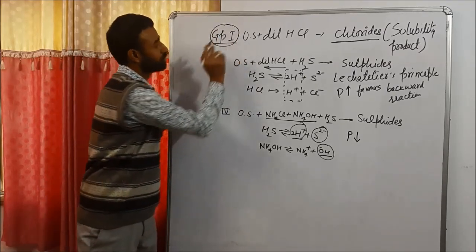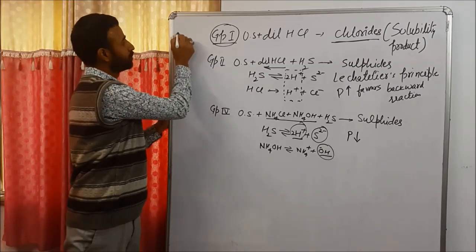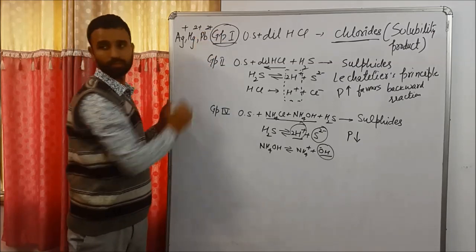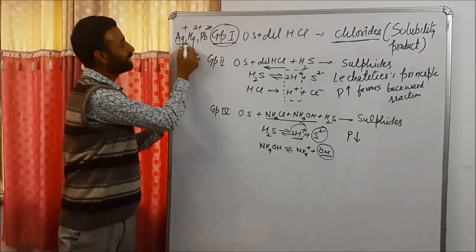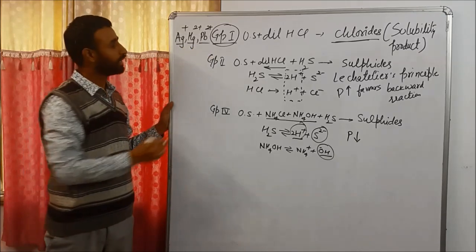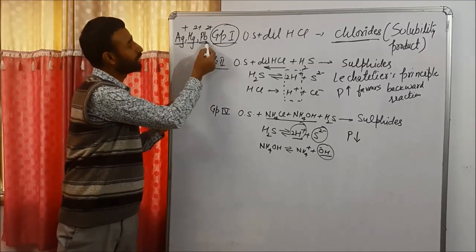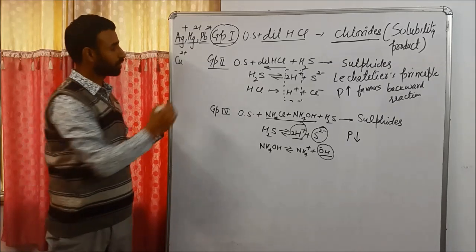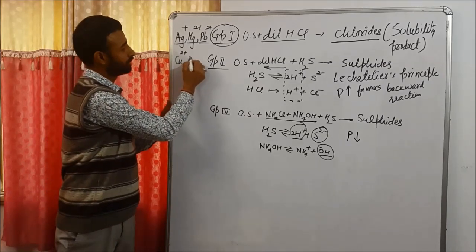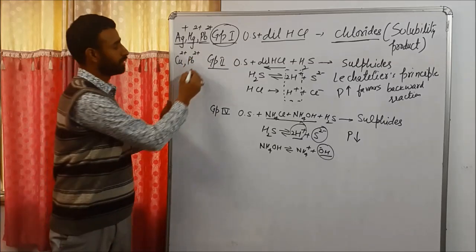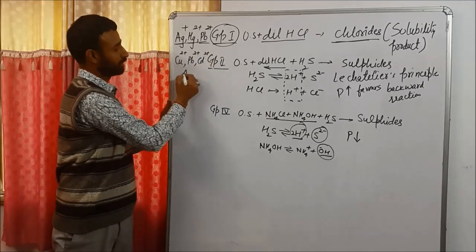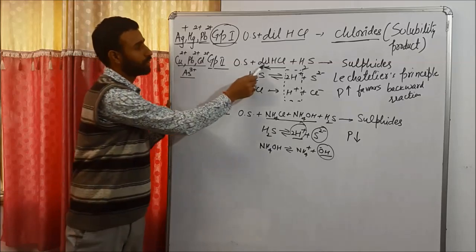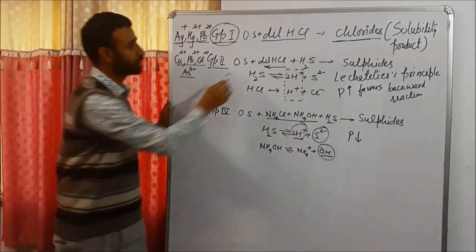What are the ions of group 1? Ag⁺. And the group reagent for group 1 is dilute HCl. For group 2, the ions are Cu²⁺, Cd²⁺, As³⁺. The group reagent is dilute HCl as well as H₂S.